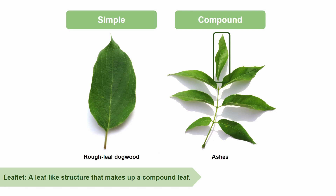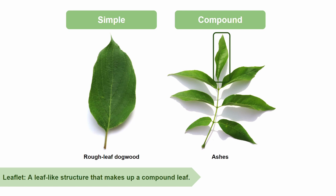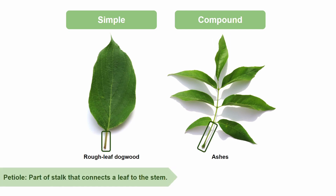What about our little nubs at the ends of the leaves? Those are the petioles, which is the part of the stalk that connects the leaf to the stem. Both simple and compound leaves have petioles. However, only compound leaves have a rachis, which is the point on a compound leaf where the leaflets meet.